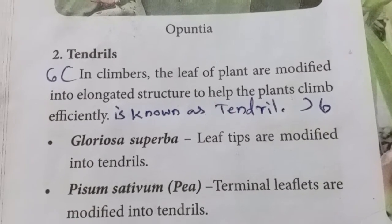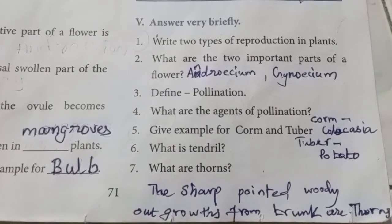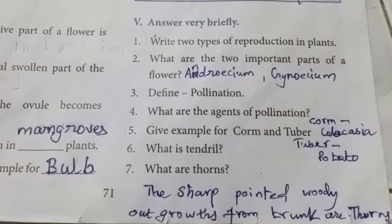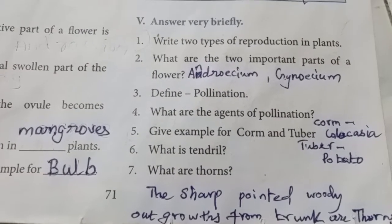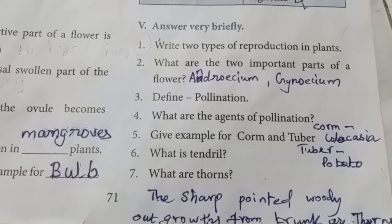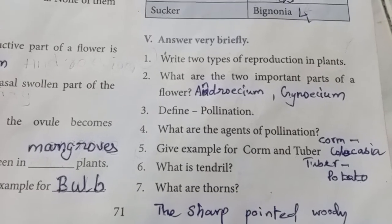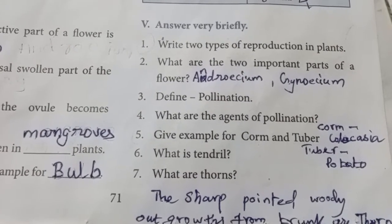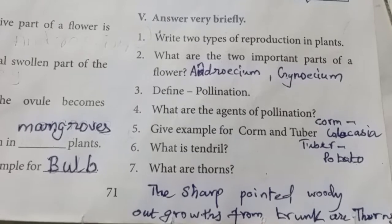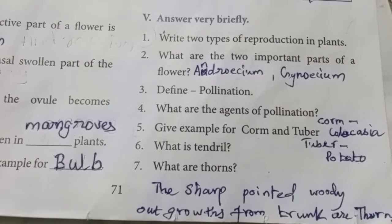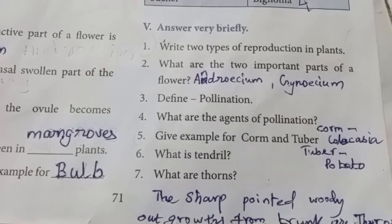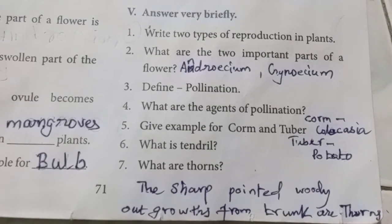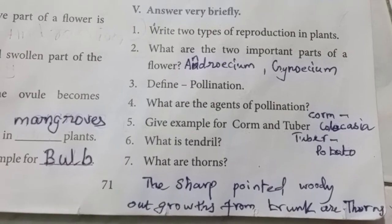What are thorns? The sharp pointed woody outgrowths from the trunk are thorns. An example for thorns is the rose plant, where there are sharp pointed, very hard spines that are actually outgrowths of the trunk. So the rose plant is the example for thorns.